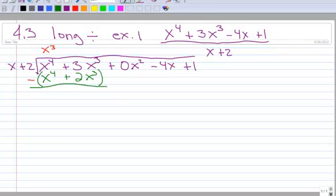And draw a line underneath. Okay, x to the fourth minus x to the fourth. So those have canceled out. 3x cubed minus 2x cubed is 1x cubed. I don't need to write the 1, but you could write the 1 if you want. And then you want to bring down your next term. So plus 0x squared.